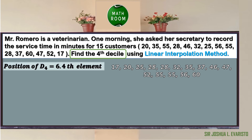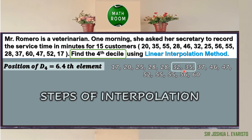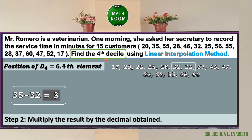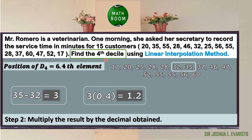The position of D sub 4 is the 6.4th element, meaning it is between the 6th and 7th elements, which are 32 and 35. Step 1 of interpolation: find the difference — 35 minus 32 = 3. Step 2: multiply the result by the decimal obtained — 3 × 0.4 = 1.2.